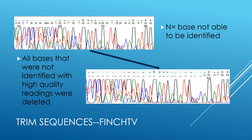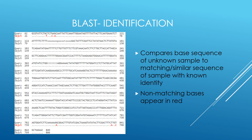Sequences were then trimmed using the program Finch TV. Trimming required eliminating base information from the ends of all sequences due to their low quality readings or inability to be determined, which made identification more accurate. The sequences were then run through the basic local alignment search tool, BLAST, and compared to the National Center of Biotechnology Information NCBI database. The matching sequences identified which family or species the sample belonged to. For the seven samples that were able to be sequenced, there were varying degrees of success. While they were all identifiable, the accuracy of those identifications is unknown without repeating the procedure.